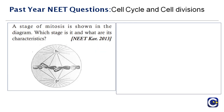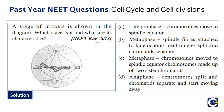The next question from 2013 shows a diagram of a mitosis stage and asks to identify it with characteristics. Option A, late prophase, states 'chromosomes move to the spindle equator' — that is wrong. Late prophase is when the nuclear envelope breaks down and chromosomes become fully condensed.